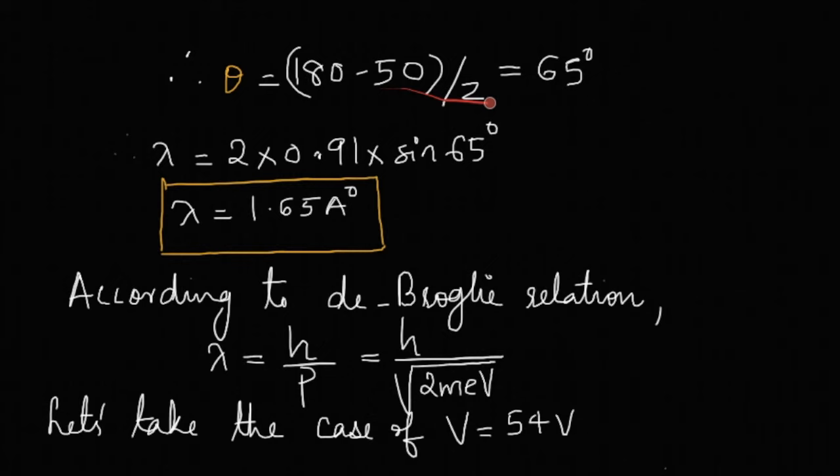Lambda is equal to 2 into d is 0.91 angstrom sin 65 degrees. On calculating we get 1.65 angstrom as the wavelength. This is the wavelength obtained from the diffraction experiment, the wavelength that we arrive at is given by 1.65 angstrom.